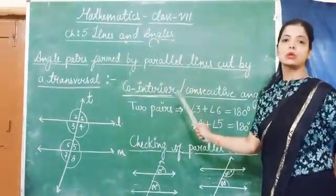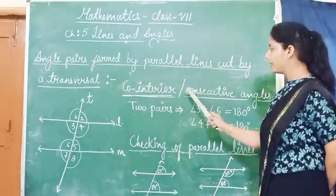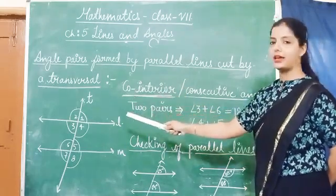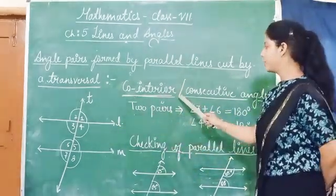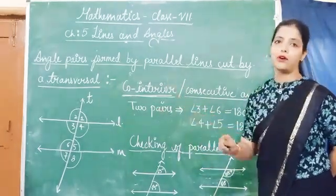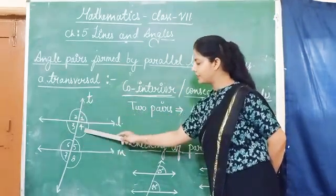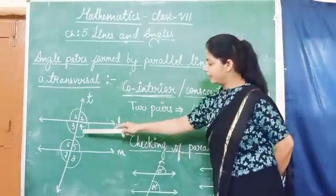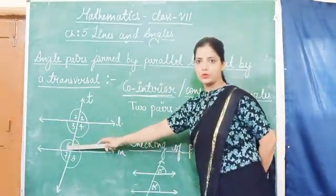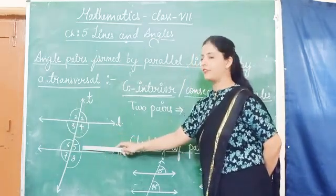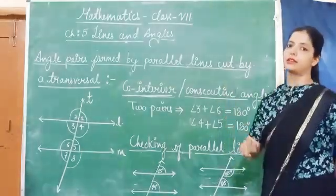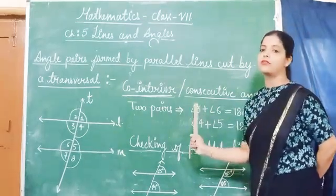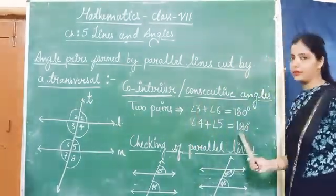Next is co-interior or consecutive angles. We again select interior angles — angles 3, 4, 5, and 6. The pair of co-interior angles, which are on the same side of the transversal, is always supplementary, meaning their sum is 180 degrees. Angle 3 plus angle 6 equals 180 degrees, and angle 4 plus angle 5 equals 180 degrees. Unlike the other angle pairs which are equal, co-interior angles sum to 180 degrees.